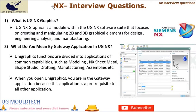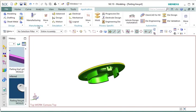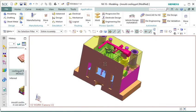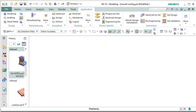Question 1: What is UGNX Graphics? UGNX Graphics is a module within the UGNX software suite that focuses on creating and manipulating 2D and 3D graphical elements for design, engineering analysis, and manufacturing. It provides a comprehensive set of tools for creating, manipulating, and visualizing 3D models and assemblies, offering advanced graphics capabilities that enable users to interact with their designs in a realistic and intuitive manner.